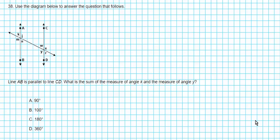Let's move on to question 38. Use the diagram below to answer the question. Line AB is parallel to CD. What is the sum of the measure of angle K and the measure of angle Y? So we have parallel lines cut by a transversal. Whenever you have parallel lines cut by a transversal, you look at the angles. Angles that look the same are equal, and angle pairs that look different are always supplementary.